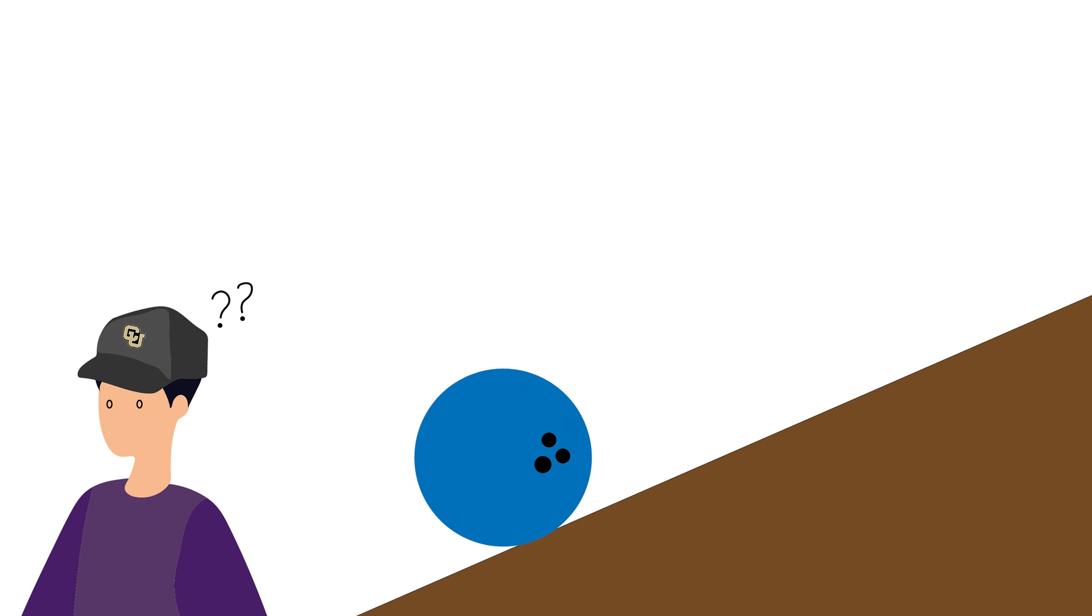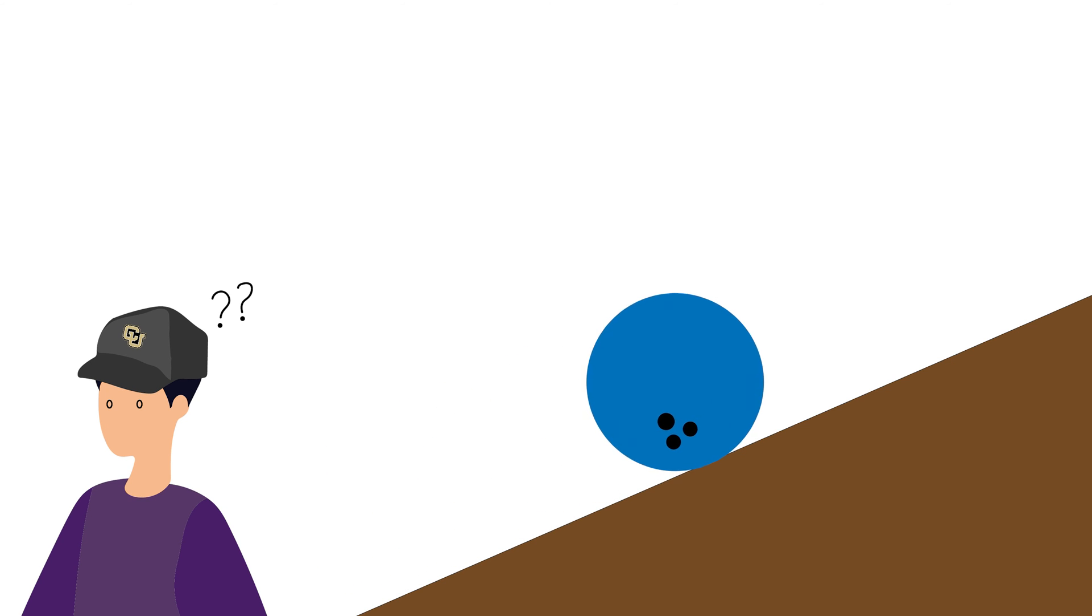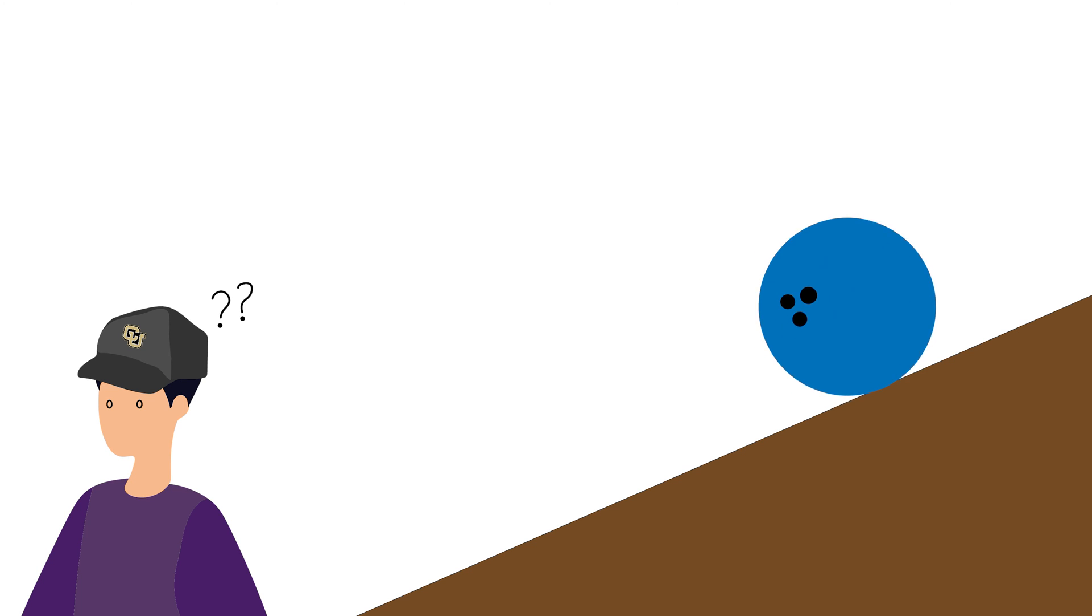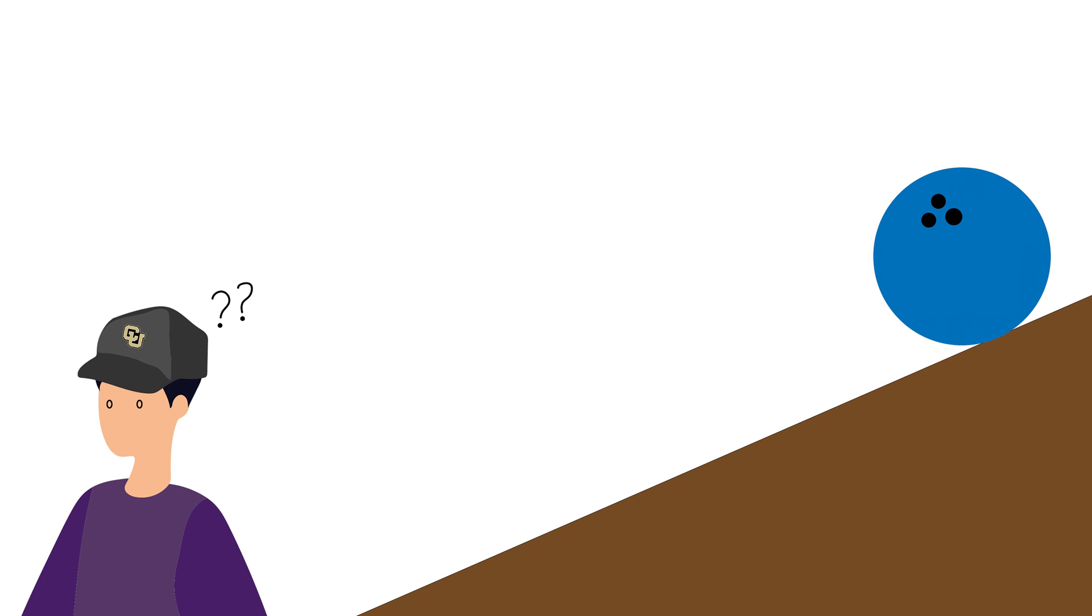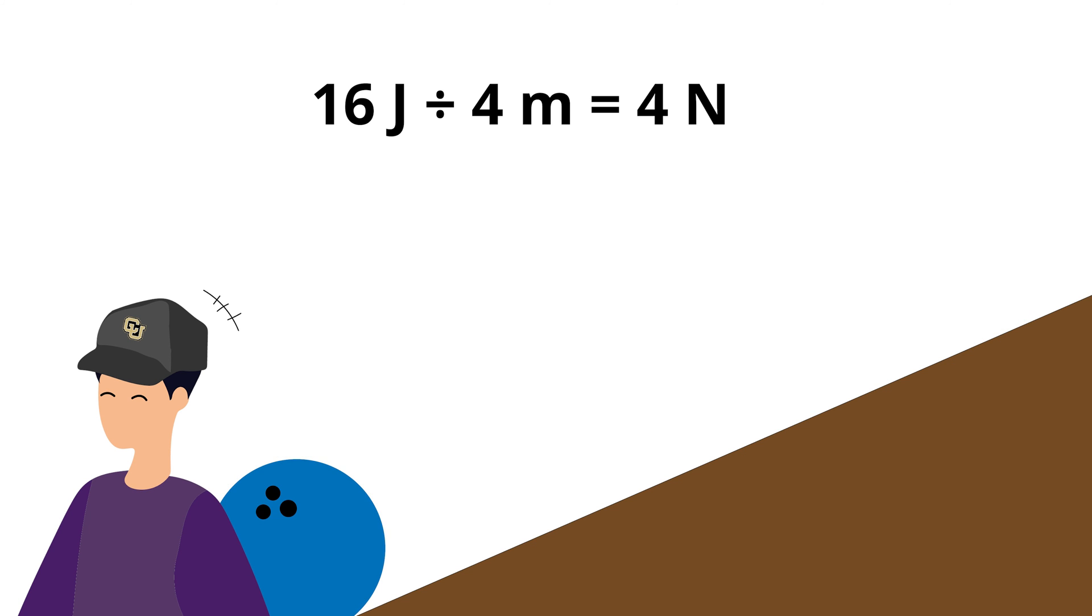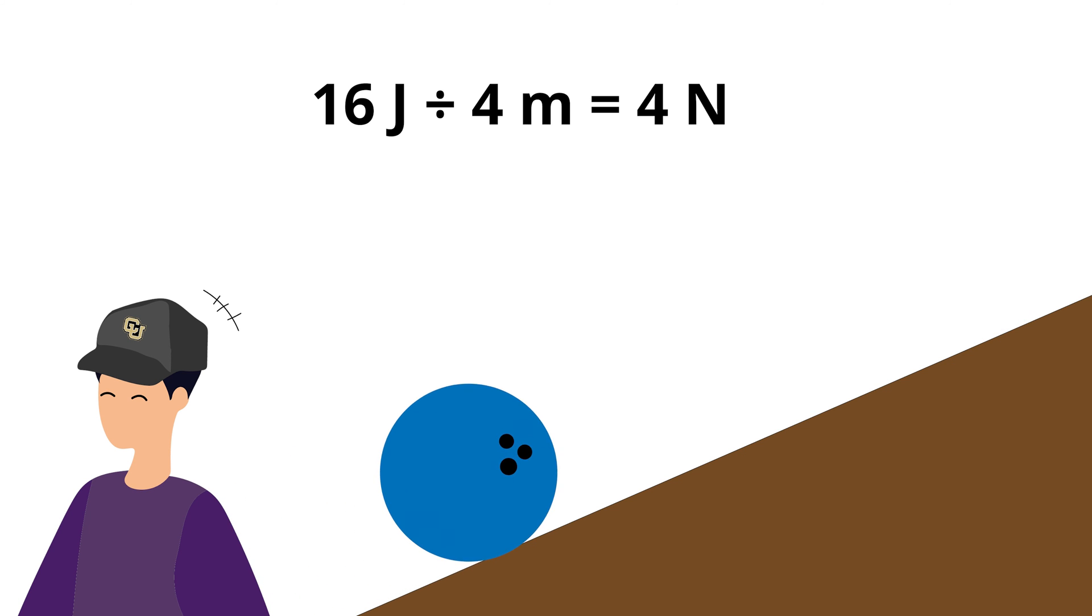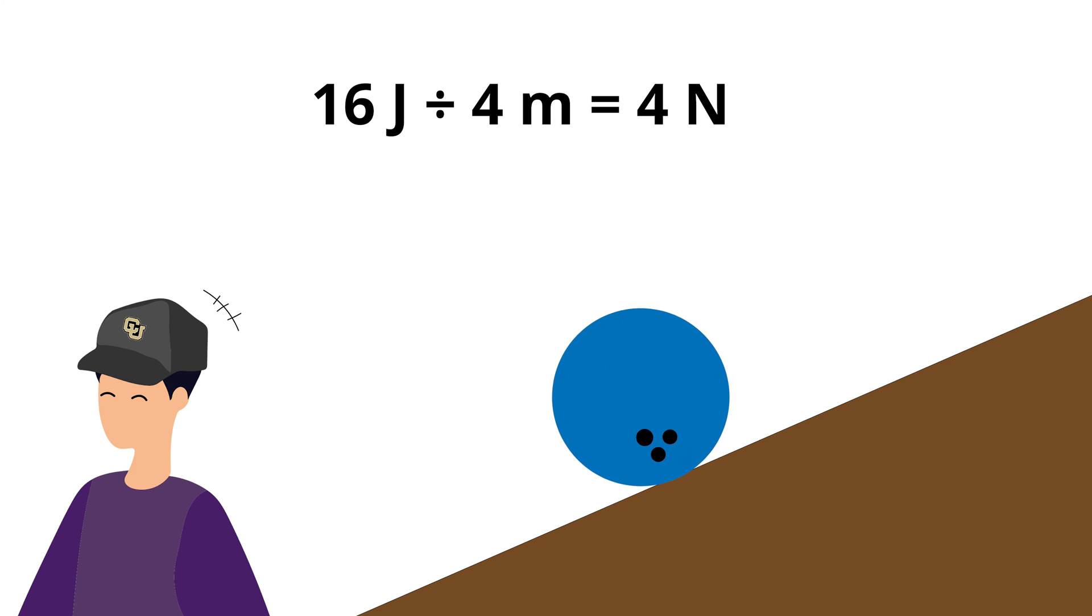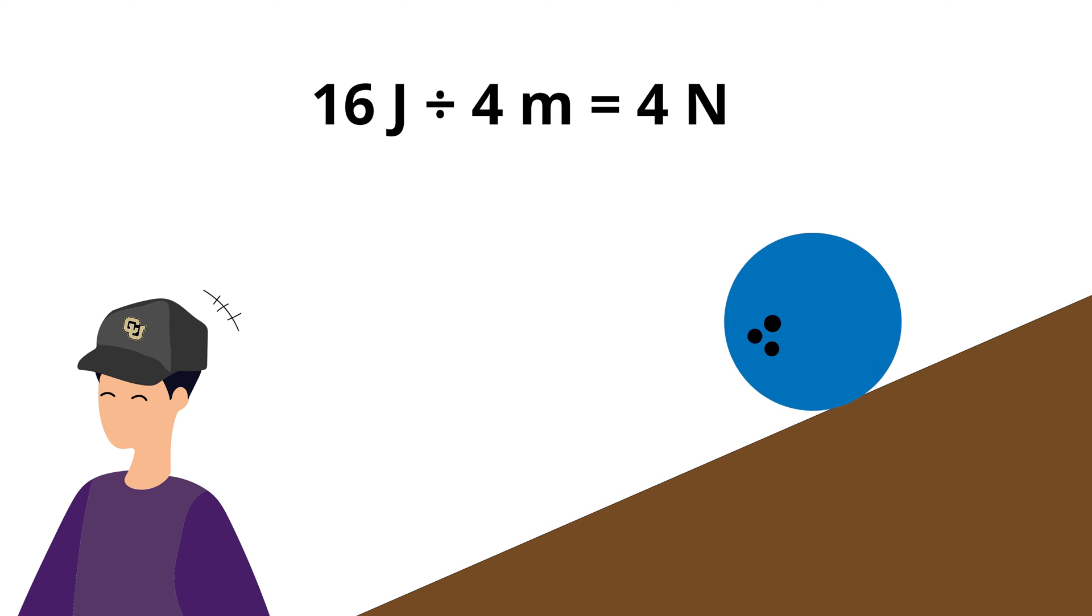Now, if we roll the ball up a ramp that is 4 meters long, with what force do we have to push it in order for the total amount of work to equal 16 joules? The answer is 4 newtons. So, with the ramp, which coincidentally is a simple machine known as the inclined plane, we were able to cut in half the force we needed to exert on the ball.